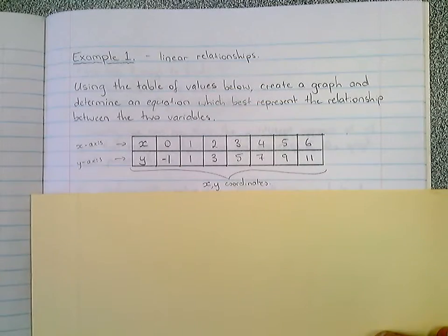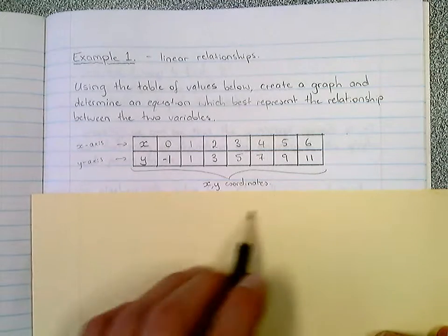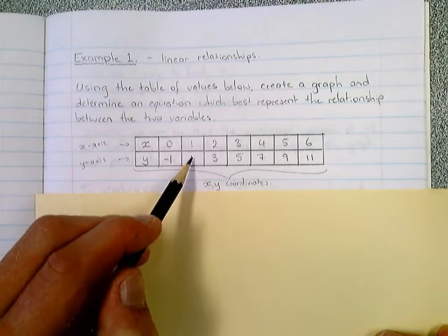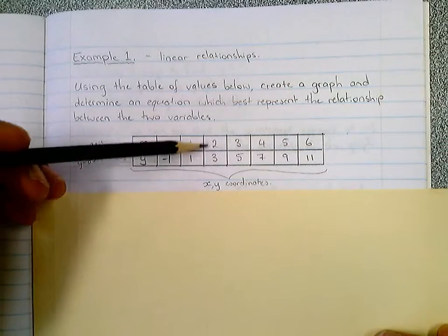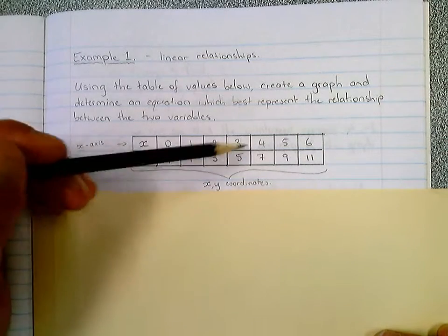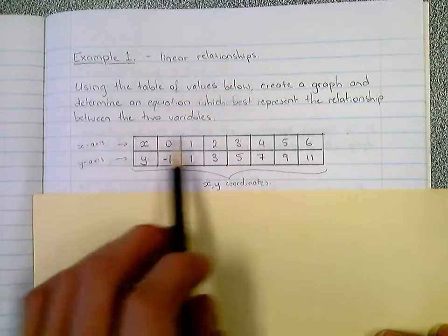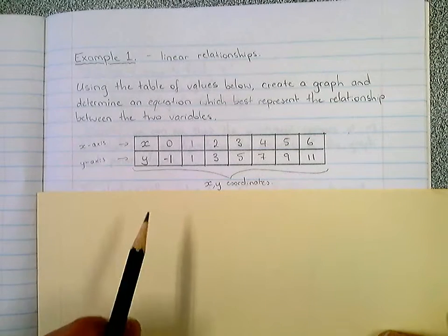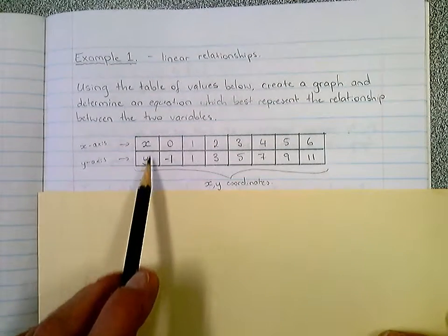And obviously these are our x and y variables. Now you can think of them, I'll put this little note down here, you can think of each of these things as x, y coordinates. So right here we have one coordinate, another coordinate, another, another, another, another, another. So what we can do with this data or these values here is put it into an x, y-axis such that we can graph this information to get a better idea as to the relationship between these two variables.